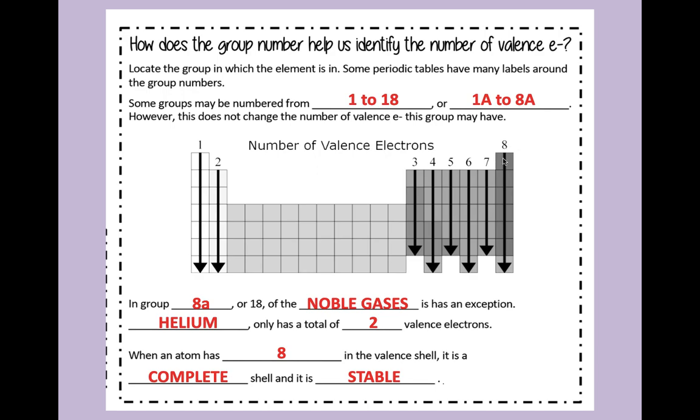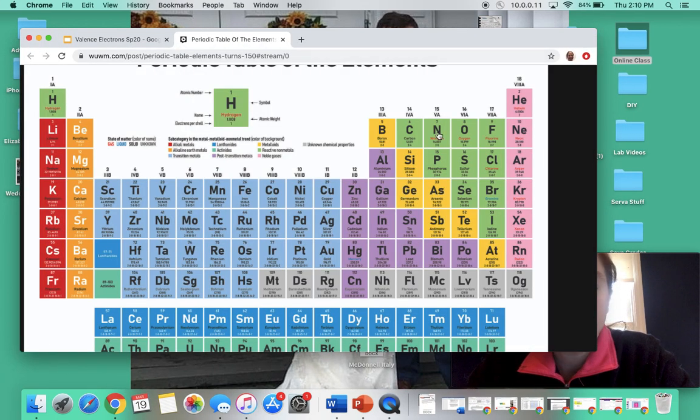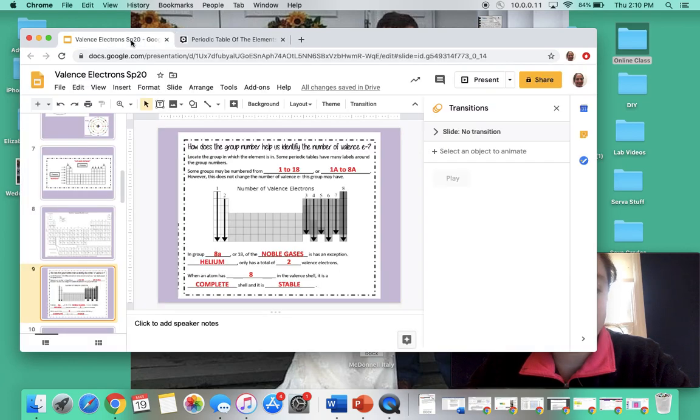In group 18, or the noble gases, helium is our exception to the rule. Helium only has a total of two valence electrons. If I jump back to the periodic table, we can see that helium's atomic number is two. That means there is only two protons and two electrons. Now it is in group 18. So while you would think that it would have eight valence electrons, it can't have eight. It only can have two because there's only two regular electrons. So that is the one exception to the rule.